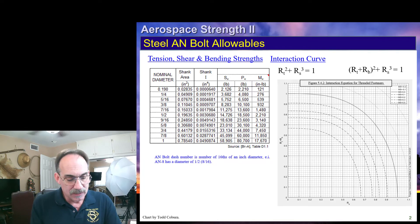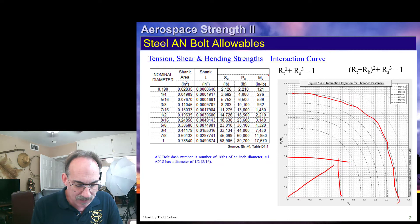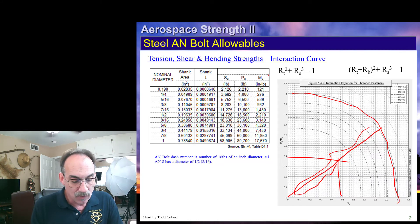You'll notice that the interaction curve is right here. You can write your margins of safety in the regular way by just plotting your RS versus your RT and RB. Draw the line, and it's that over this length.